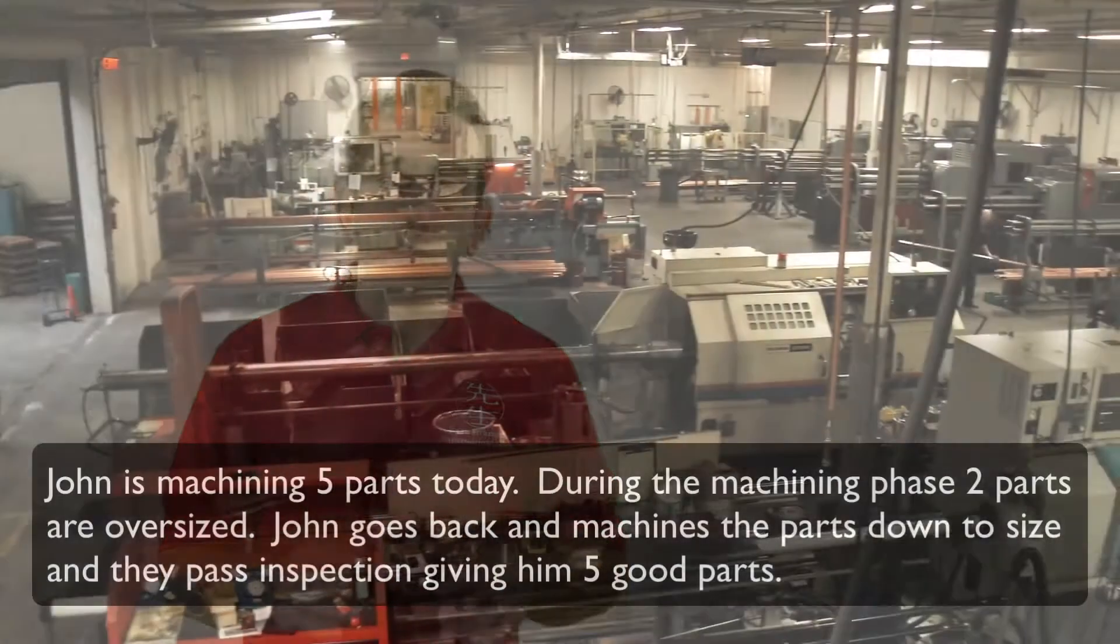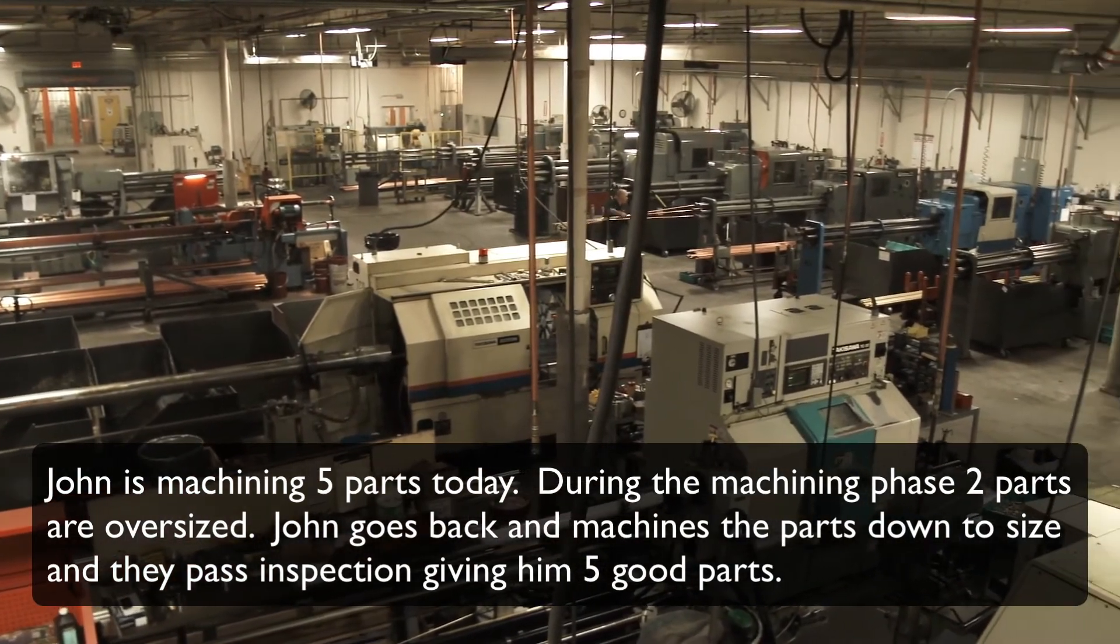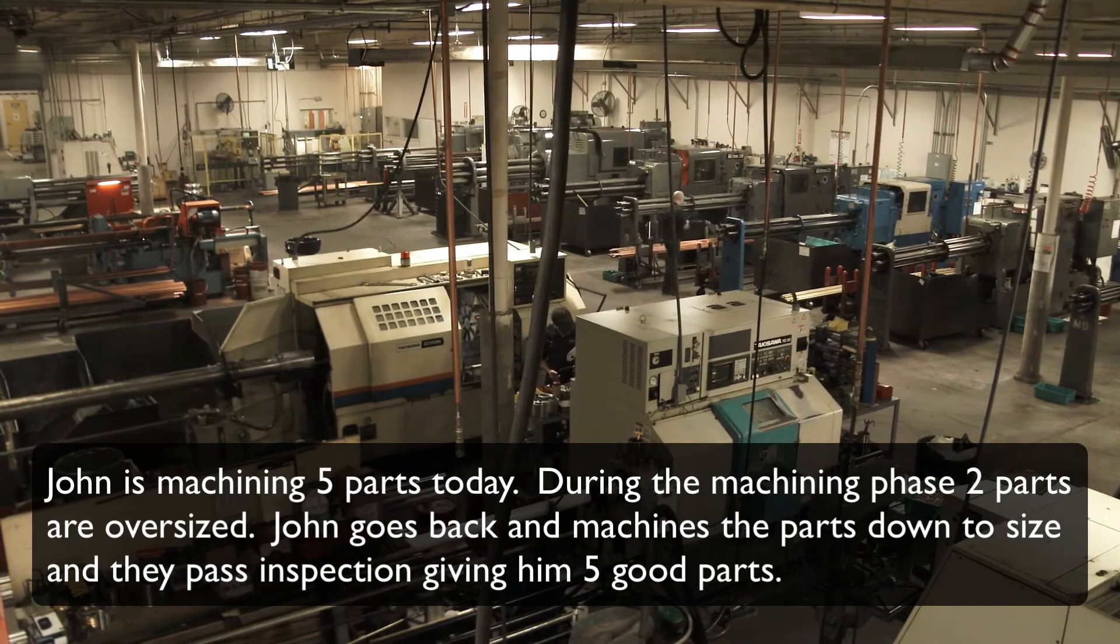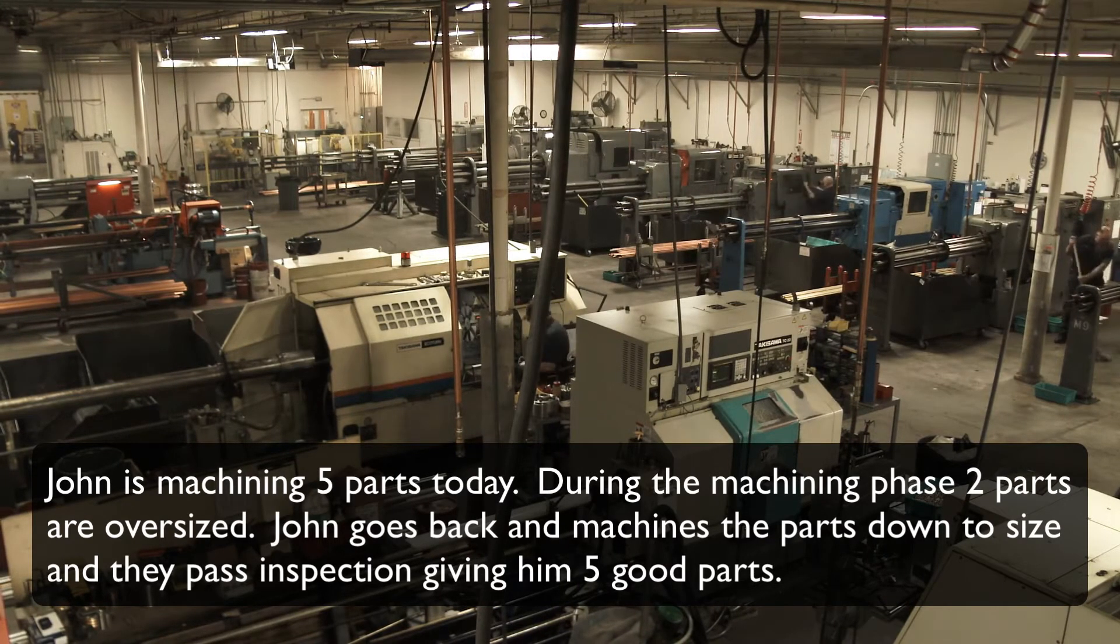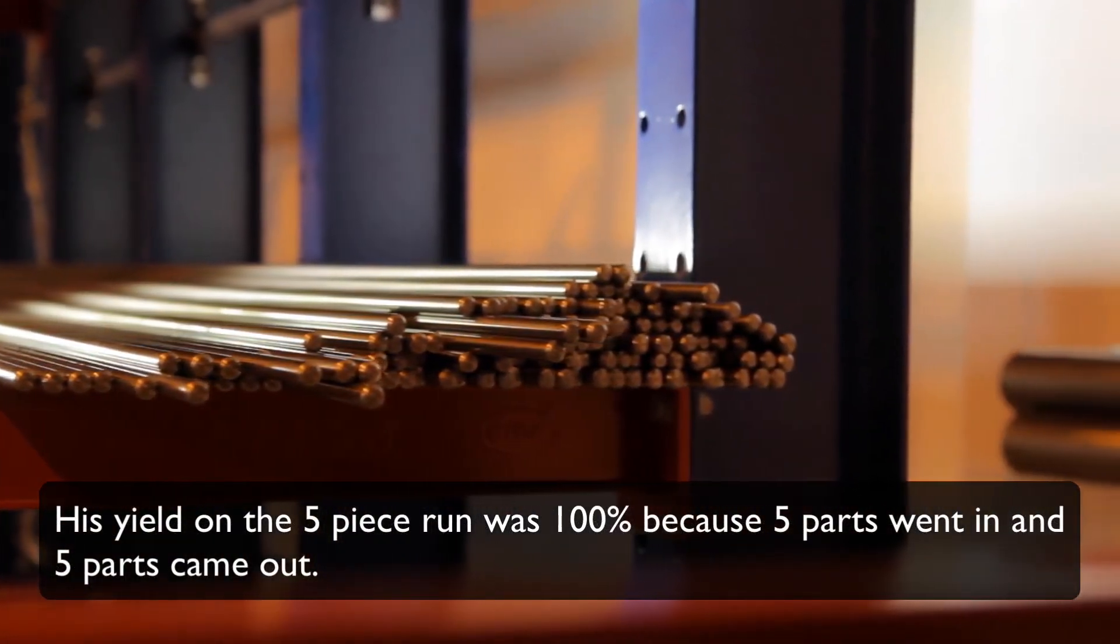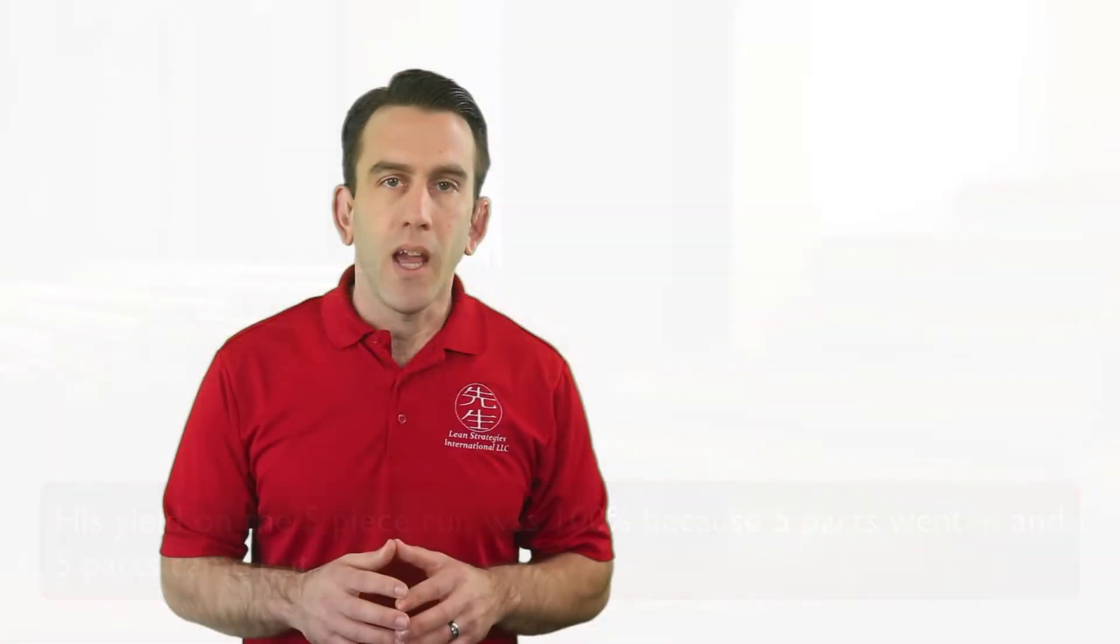Now let's test our new knowledge out. John is machining five parts today. During the machining phase, two parts are oversized. John goes back and machines the parts down to size, and they pass inspection giving him five good parts. His yield on the five-piece run was 100% because five parts went in and five parts came out.